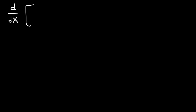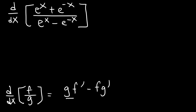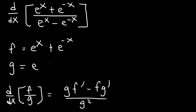Let's try this problem. Find the derivative of e to the x plus e to the negative x, divided by e to the x minus e to the negative x. Since we have a fraction, we need to use the quotient rule: the derivative of f over g is g times f prime minus f times g prime, all over g squared. So f is e to the x plus e to the negative x, and g is e to the x minus e to the negative x. f prime: the derivative of e to the x is e to the x, and the derivative of e to the negative x is e to the negative x times negative 1.